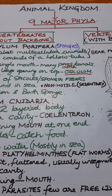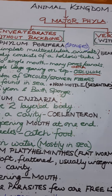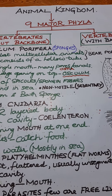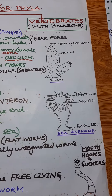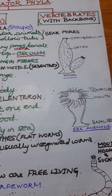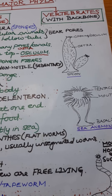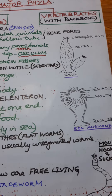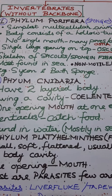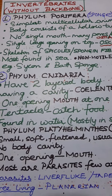Hello children, let us do the classification of animals. We have already started and finished the classification of the vertebrates. The vertebrates are divided into five classes: Pisces, amphibians, reptiles, aves, and mammals. Today we will be doing the classification of invertebrates.